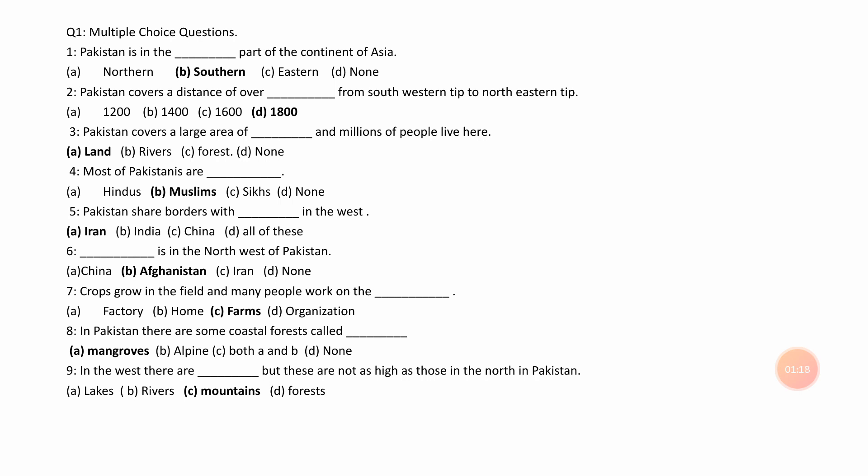Number 8. In Pakistan, there are some coastal forests called ___. A. Mangrove, B. Alpine, C. Both A and B, D. None. Answer is A. Mangrove.